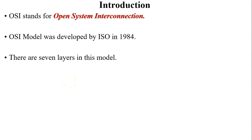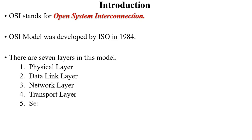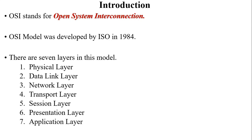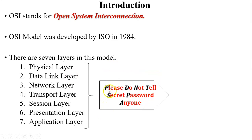There are seven layers in the OSI model: Physical, Data Link, Network, Transport, Session, Presentation, and Application. To remember all these layers sequentially, here is one trick — read this statement: 'Please Do Not Tell Secret Password Anyone.' Take the first character of all the words and you can write all the layers in sequential order.